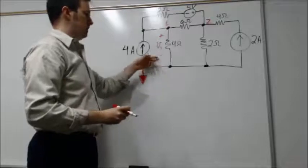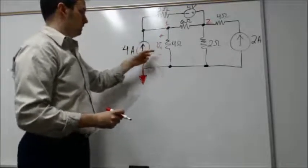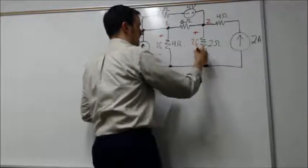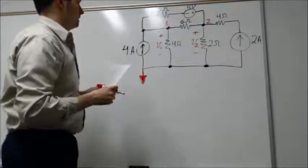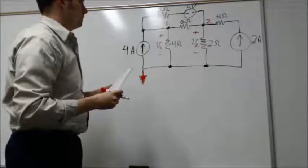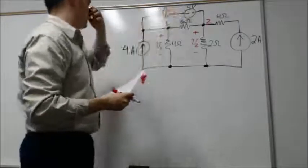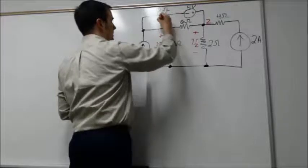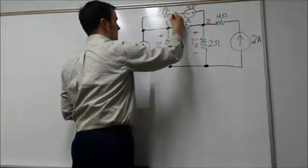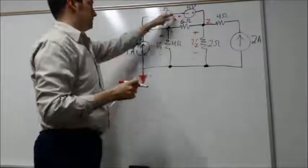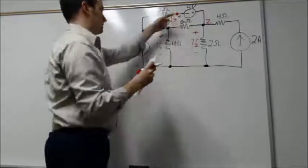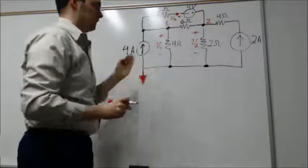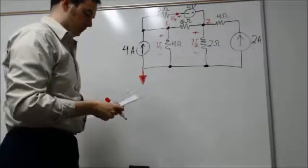Similarly, V2 goes from minus to positive. We also need to define a third node voltage, V3, because we have to account for what's happening up here in this branch, as it impacts the currents flowing into this node. V3 is referenced to this specific point but still referenced back to our reference voltage. You can think of the reference voltage as a null potential source with zero volts.